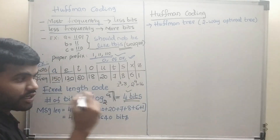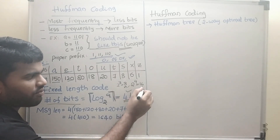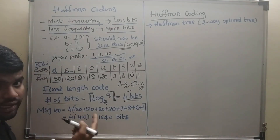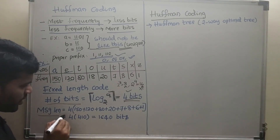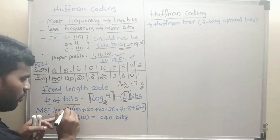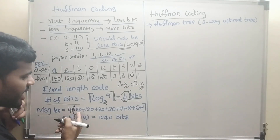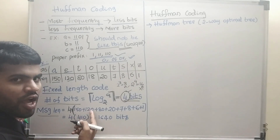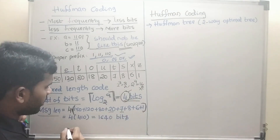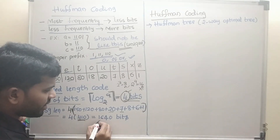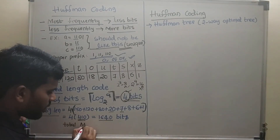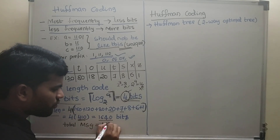You should always take the ceiling, not round to the nearest value. Then calculate the total message length: each character is represented in 4 bits, so 4 multiplied by the total occurrences (150 + 120 + 80 + ...) gives 410 total characters. Multiplying 4 into 410, you get 1640 bits total message length.